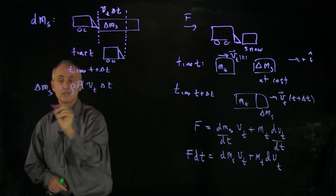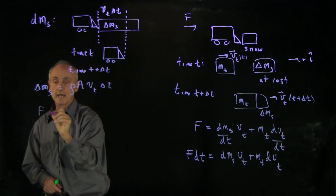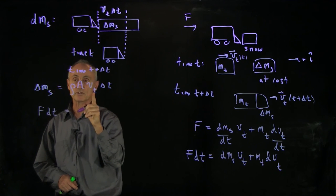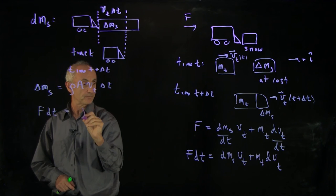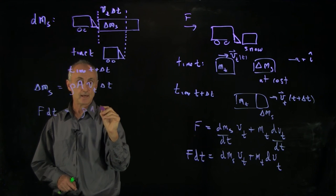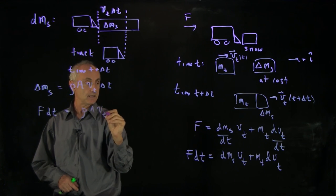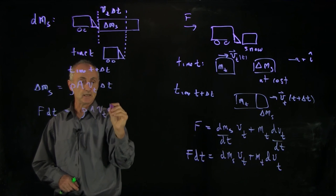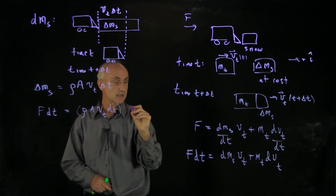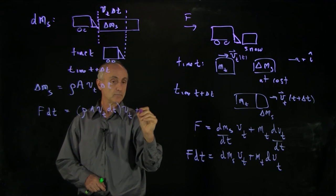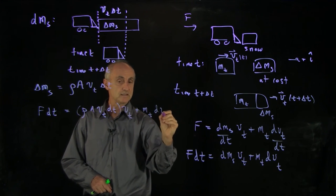And we can write that in the following way, that we see that our differential equation f dt equals dms, which is rho a vt times dt. This will be a small interval. We're taking a limit now. Times another vt plus mt dvt.